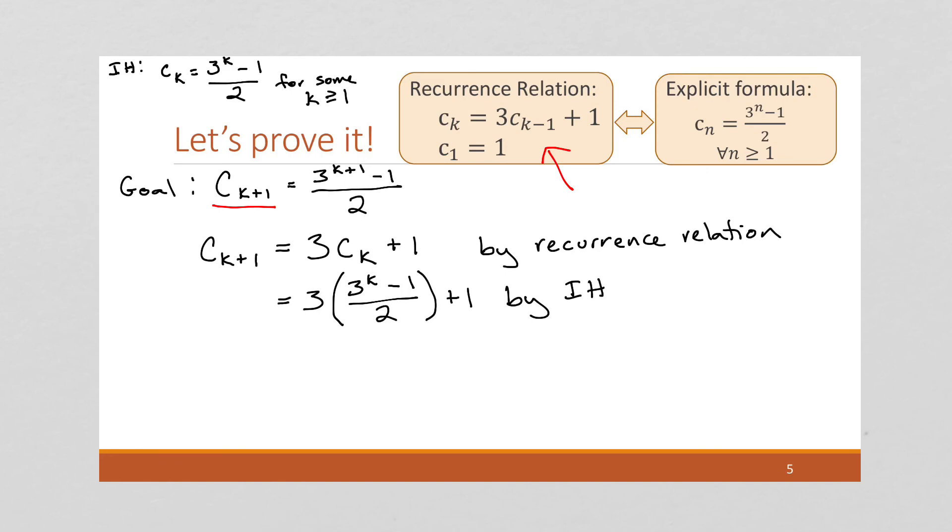And then I'm going to start doing, this becomes an algebra problem. We know that algebra is everybody's favorite subject. So I'm going to distribute this 3. And this is going to become 3 times 3 to the k minus 3 all over 2 plus 1, which I'm going to use the rules of exponents to simplify this further. And this is going to become 3 to the k plus 1 minus 3 over 2 plus 1.